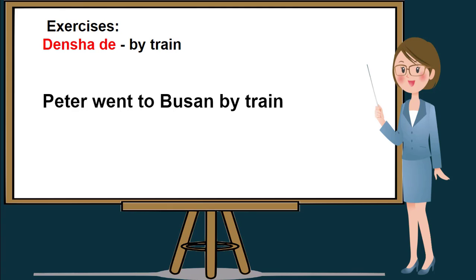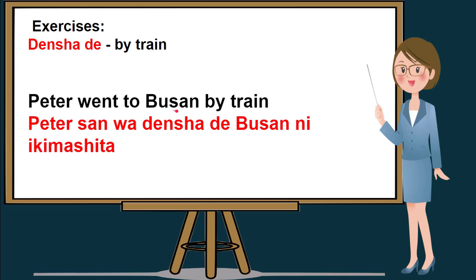Now we will be having some exercises using by train. By train in Nihongo is densha de. I'll be giving you five seconds to translate this sentence in Nihongo using densha de. The sentence will be: Peter went to Busan by train. Your five seconds start now. Very good. Peter went to Busan by train will be Peter san wa densha de Busan ni ikimashita. Peter san wa should be in the beginning of the sentence as a substitute for a pronoun, followed by densha de, followed by Busan ni ikimashita.